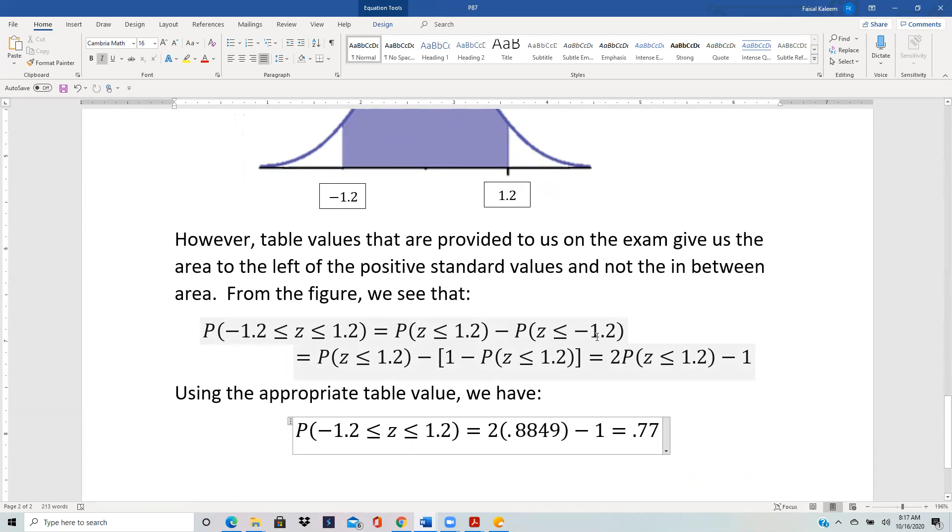P(Z < -1.2) is the same as 1 - P(Z ≤ 1.2), because Z less than negative 1.2 is one tail, and less than 1.2 is all that, and 1 minus less than 1.2 is the white area. These two combine to give 2·P(Z < 1.2) - 1.